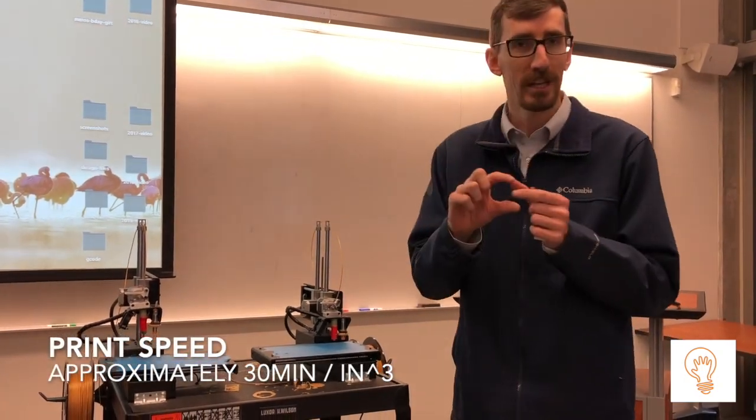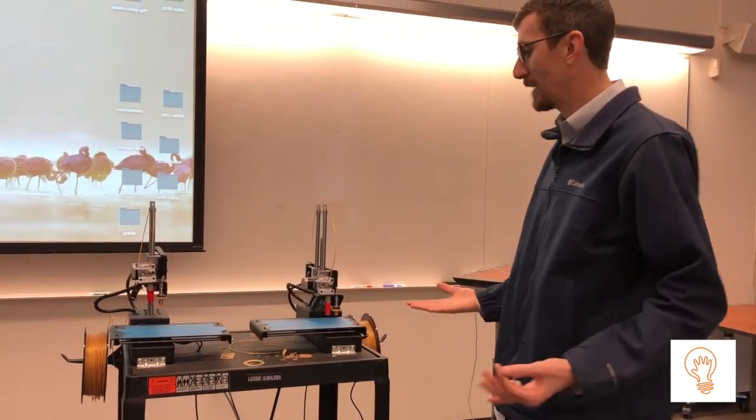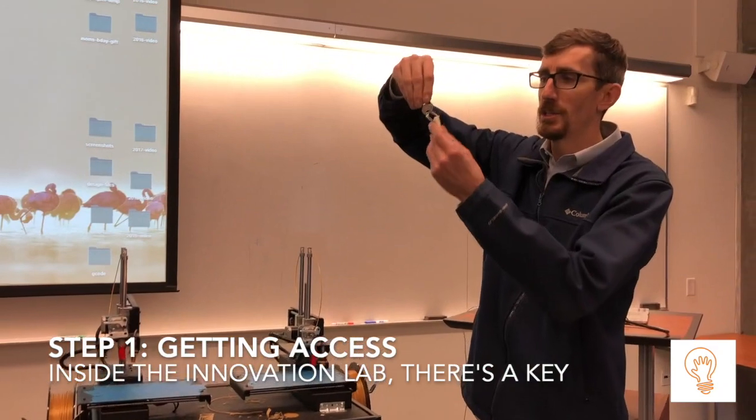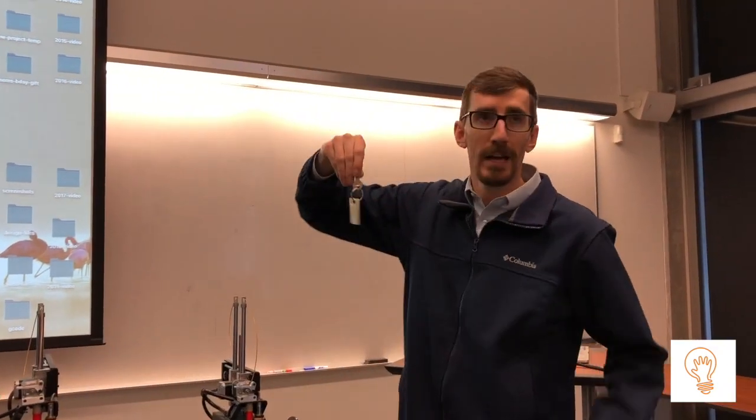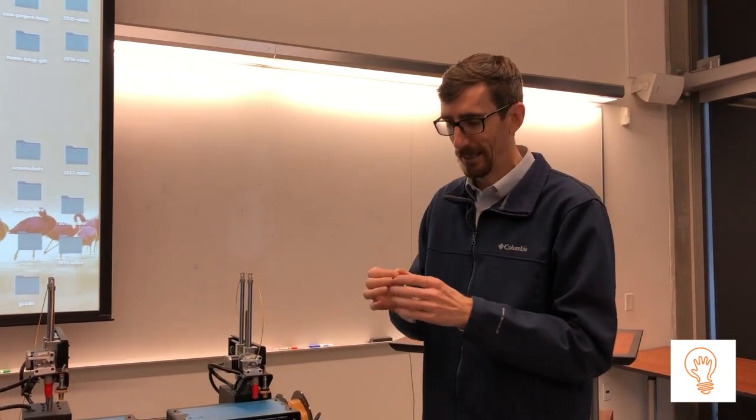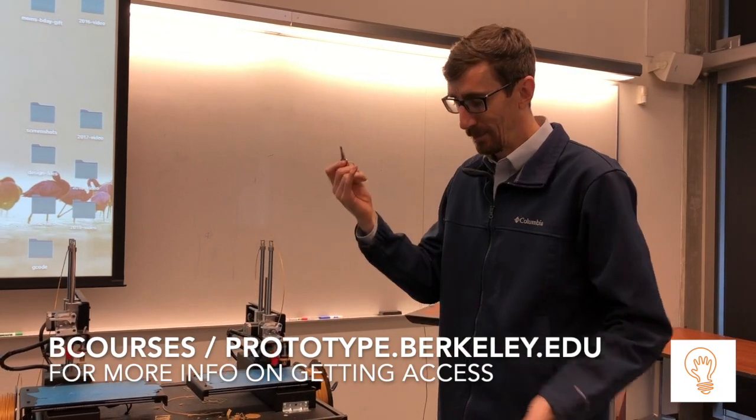The build volume is about six inches by six inches by six inches. 3D printing takes time - one cubic inch takes about 30 minutes. To get access to these machines, there's a key with a 3D printed part on it located in the supply cabinet.